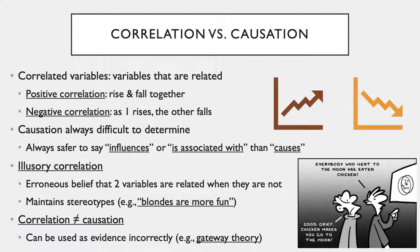Whereas correlation is relatively easy to find between variables, causation is always difficult to determine. In research studies, as well as in everyday life, it is always safer to say that variables influence or are associated with each other rather than using the term 'causes.' To demonstrate causation requires a very carefully controlled experimental design, which is not true of most research studies. An illusory correlation refers to any time there is an erroneous belief that two variables are related when they are not.